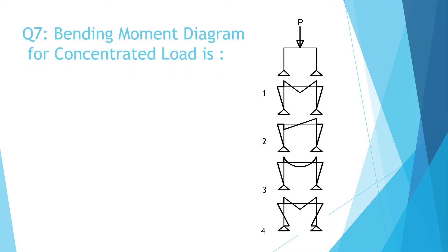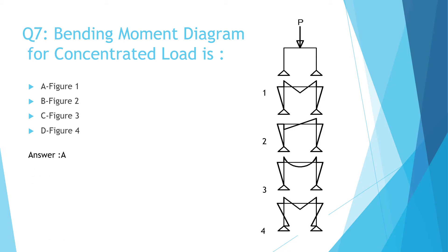Question 7: The bending moment diagram for a concentrated load is — A. Figure number 1, B. Figure number 2, C. Figure number 3, D. Figure number 4. The correct answer is A: Figure number 1.